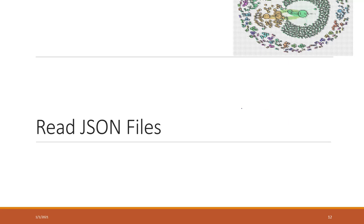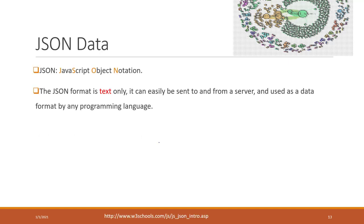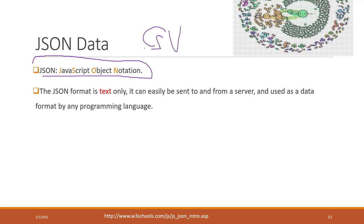Now let's see how we can load single-line structured data, like JSON data, into Python. JSON stands for JavaScript Object Notation, and it is currently one of the most common data formats that people use to share data over the internet. In the past, people shared data in CSV format, but now more people share it in the JSON format.